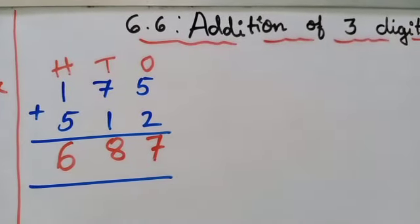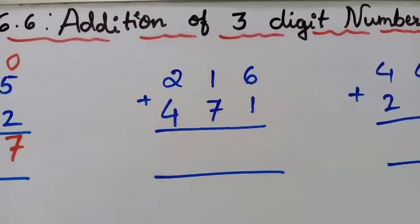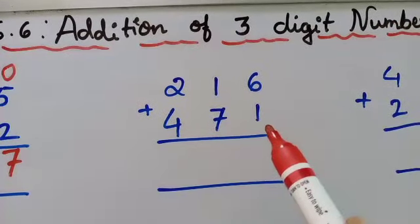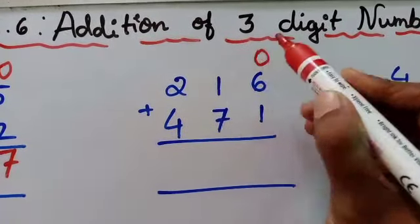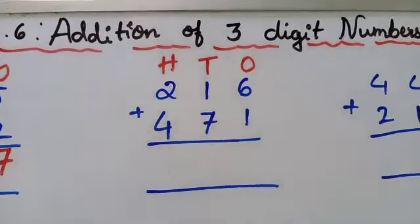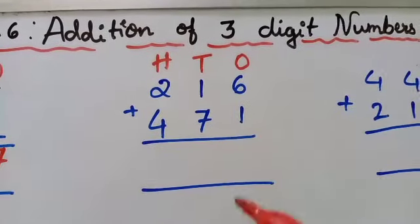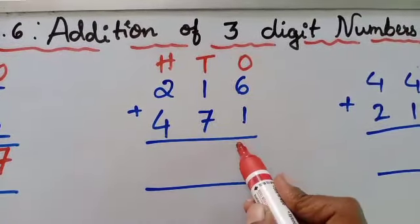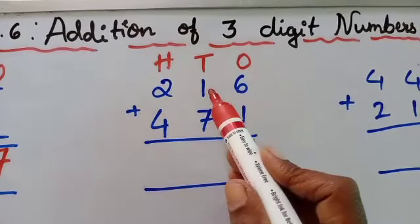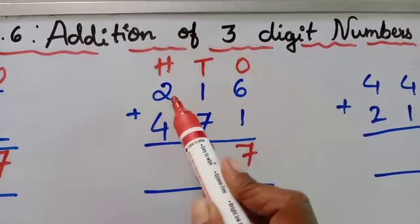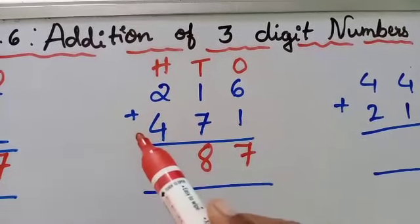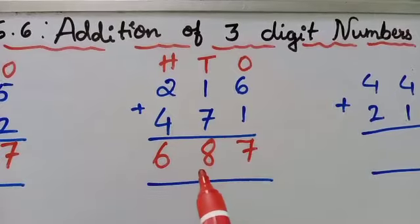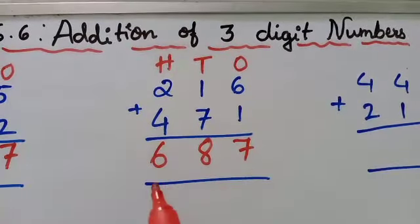Let's go to the second example: 216 plus 471. First we have to write the place value — ones, tens, and hundreds. We always have to start from the ones place. So 6 plus 1 is 7. And 1 plus 7 is 8. And 4 plus 2 — 4 should be in your mind, 2 should be in your hand — so 4 after 5, 6. The total answer is 687.